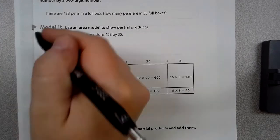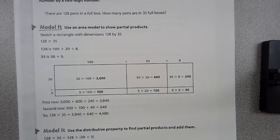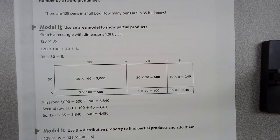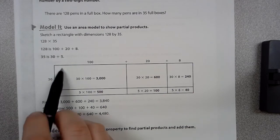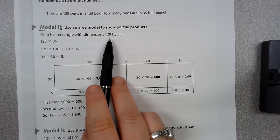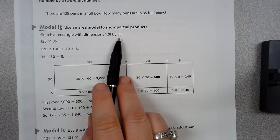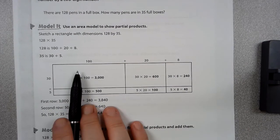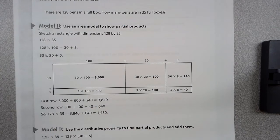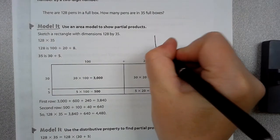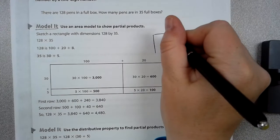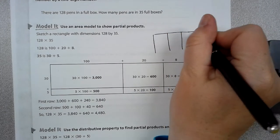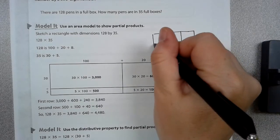So the model it right here means that this is one way we can work the problem. One way we can work the problem is by using an actual area model. When we use the area model, you have to sketch a rectangle with dimensions of 128 by 35. Our boxes can look like this.